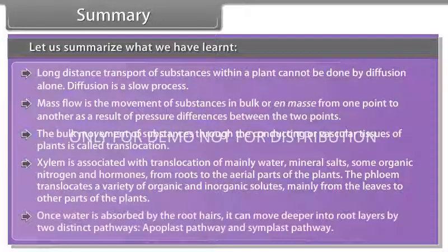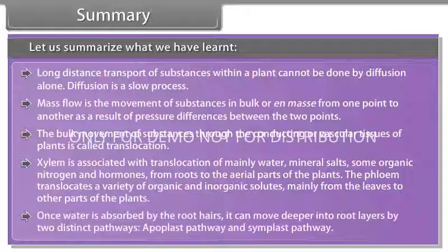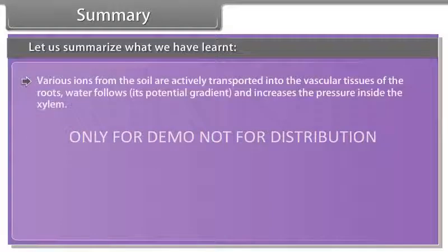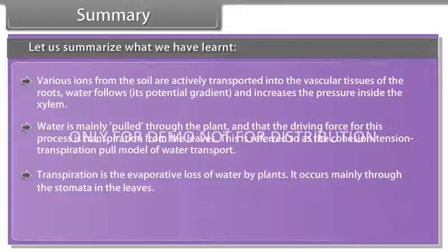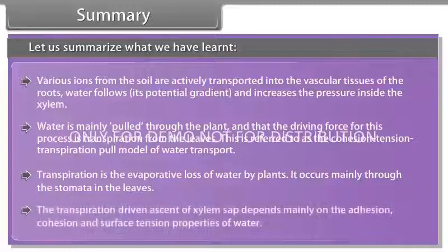Once water is absorbed by the root hairs, it can move deeper into root layers by two distinct pathways, apoplast pathway and symplast pathway. Various ions from the soil are actively transported into the vascular tissues of the roots. Water follows its potential gradient and increases the pressure inside the xylem. Water is mainly pulled through the plant and that the driving force for this process is transpiration from the leaves. This is referred to as the cohesion-tension transpiration pull model of water transport. Transpiration is an evaporative loss of water by plants. It occurs mainly through the stomata in the leaves. The transpiration-driven ascent of xylem sap depends mainly on the adhesion, cohesion and surface tension properties of water.